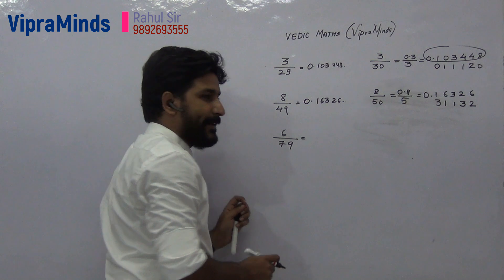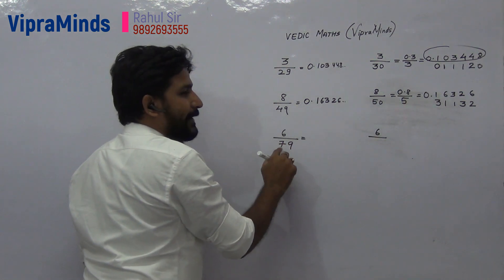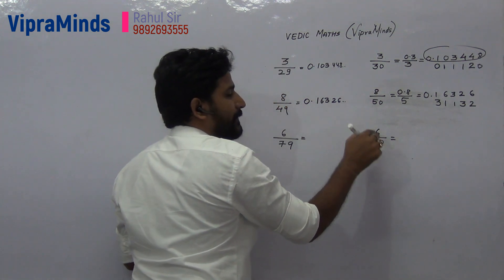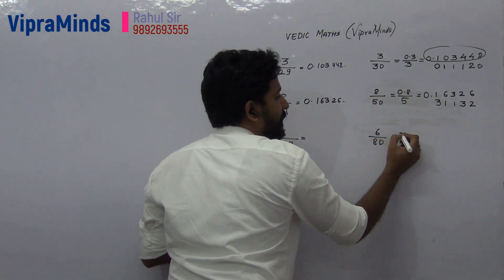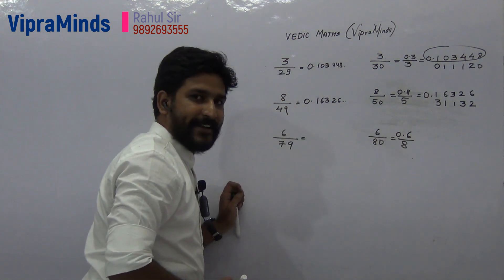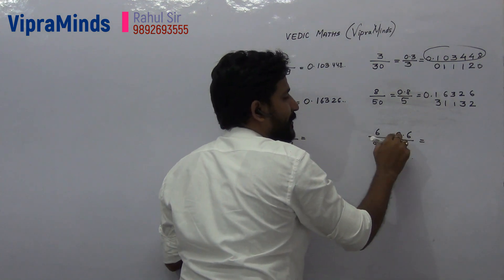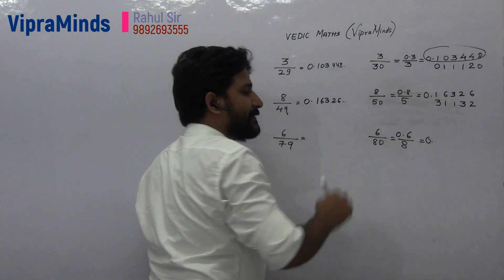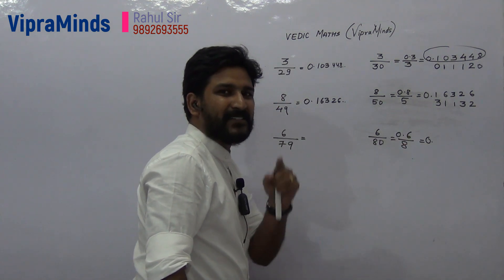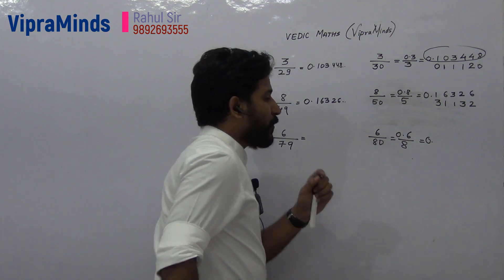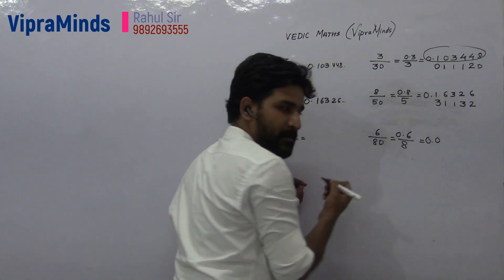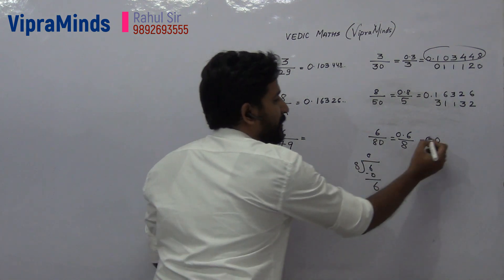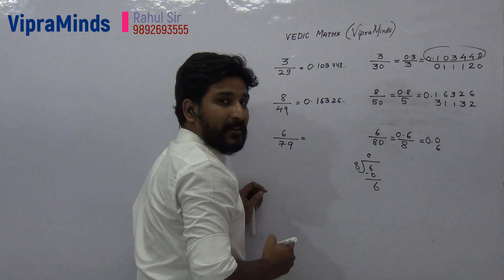Now let's take one more example: 6 divided by 79. Increase the denominator by 1 to get 80. Remove the 0 and shift the decimal point, giving 0.6 divided by 8. Now 0 divided by 8 is 0, then point. Then 6 divided by 8: 6 does not go into 8's table, so quotient is 0, remainder is 6.